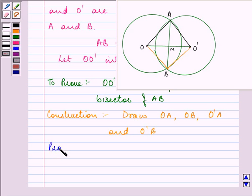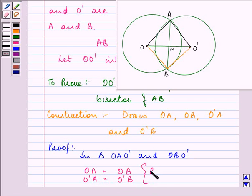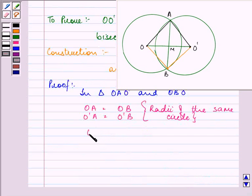Let us start with our proof. Now, in triangle OAO' and OBO', we have OA is equal to OB and O'A is equal to O'B because they are the radii of the same circle. And further, OO' is equal to OO', that is common.